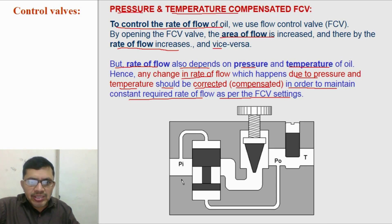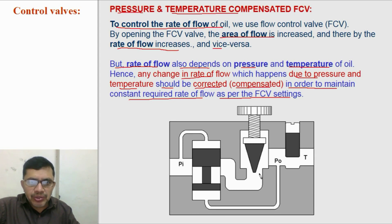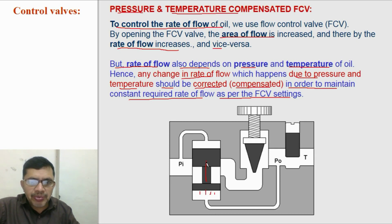For which, we use this arrangement for pressure compensation and this arrangement for temperature compensation. If pressure increases at the outlet of this flow control valve, then the rate of flow will reduce. To compensate this, we have a mechanism here. Due to this pressure, it acts in the upward direction on this spool and the spool will shift upward, allowing the passage for oil flow to increase and allowing more oil to flow through the flow control valve.